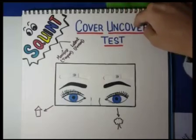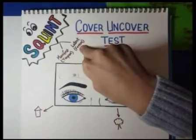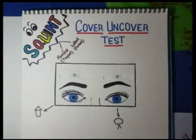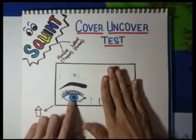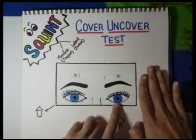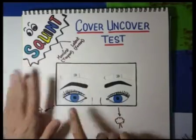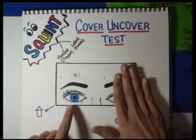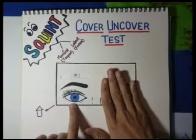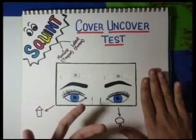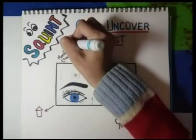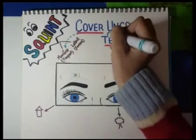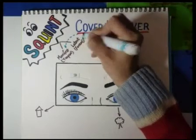Now we are going to discuss the cover-uncover test and how it is used to diagnose whether the squint is manifest or latent. In the cover-uncover test, you cover one eye and look at the other eye to see whether it moves or not. Then you uncover the eye and look at the uncovered eye to see whether it moves or not. Then you repeat the same on the other side. The cover part of the test is for manifest squint, and the uncover part is for latent squint.